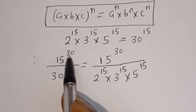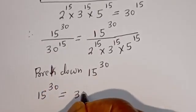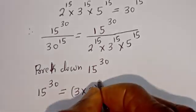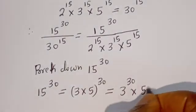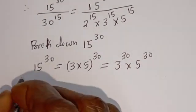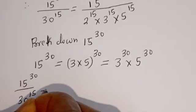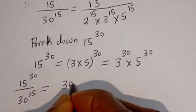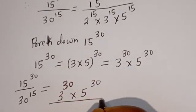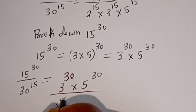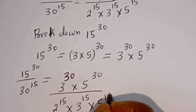Now let's break down 15^30. 15^30 is equal to (3 multiplied by 5) to the power of 30, which equals 3^30 multiplied by 5^30. So 15^30 divided by 30^15 is equal to 3^30 multiplied by 5^30, divided by 2^15 multiplied by 3^15 multiplied by 5^15.